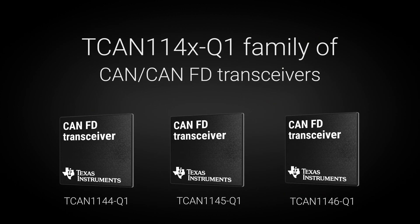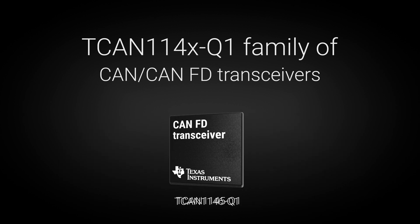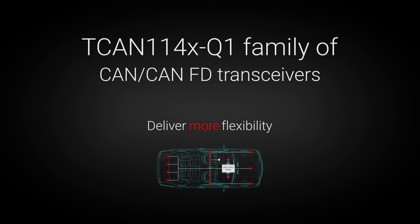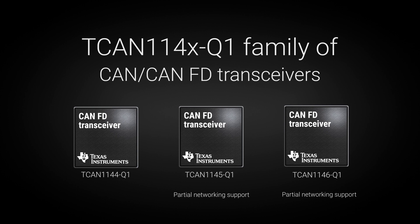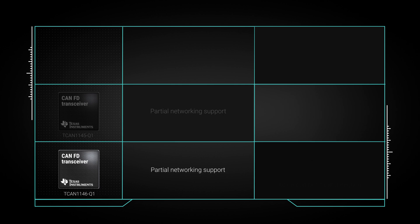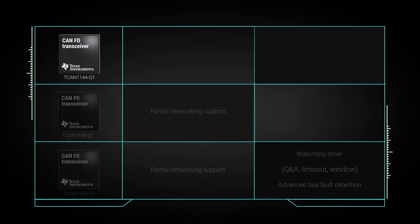With the release of the TCAN114X Q1 family of CAN-FD transceivers, designers now have more flexibility when implementing partial networking in their designs. The family consists of three pin-to-pin compatible CAN-FD transceivers. The TCAN114X Q1 is a standard CAN-FD transceiver with partial networking support. The TCAN114X Q1 builds on this by adding advanced bus fault diagnostics and three watchdog timers, including Q&A. To help designers support multiple customers with the same PCB, even when partial networking is not required, the TCAN114X Q1 includes the advanced protection features without partial networking support.